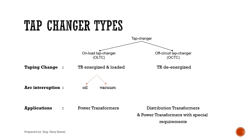Tap changer types. We can classify tap changers from an operation point of view into two different types: on-load tap changer and off-circuit tap changer. With the on-load tap changer, the tap changing can be done with the transformer energized and loaded, as it is provided with arc interrupting facility.